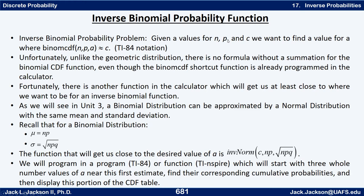N and P define which binomial distribution we're talking about, and C is going to be a cumulative probability. N is the number of trials or the sample size. P is the probability of a success each time, which is the same in a binomial probability. X is the number of successes in that sample, and C is the cumulative probability we want to have.